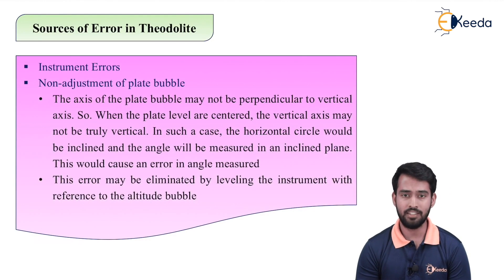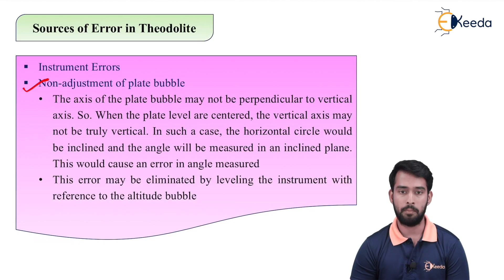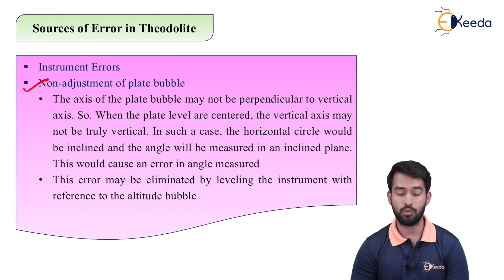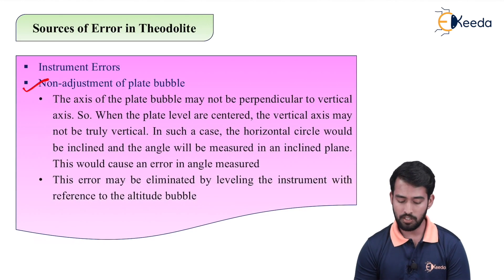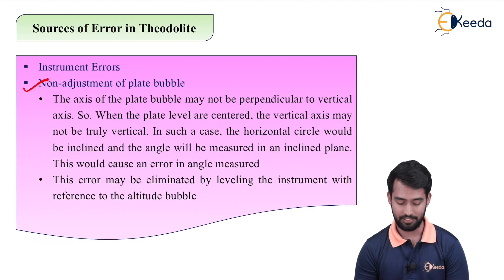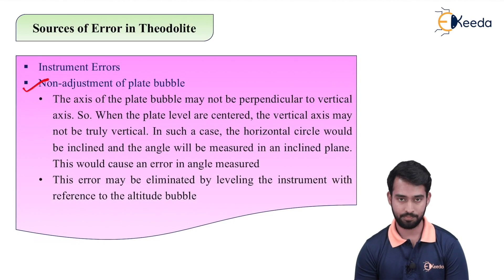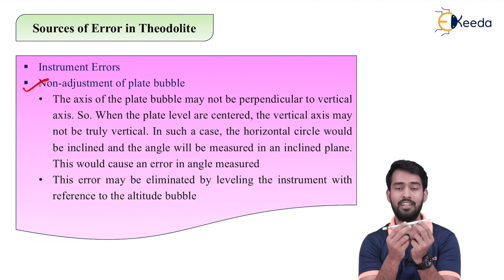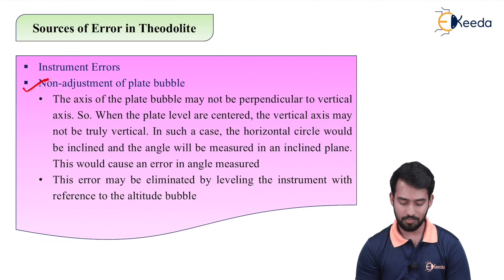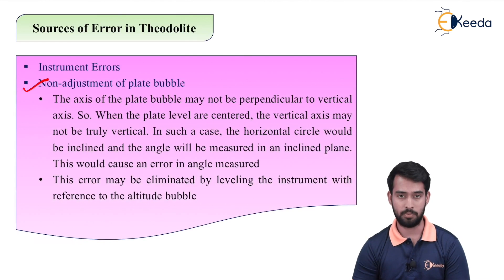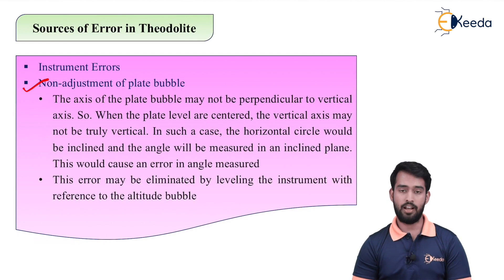The first and common error is non-adjustment of the plate bubble. The axis of the plate bubble may not be perpendicular to the vertical axis. So when the plate levels are centered, the vertical axis may not be truly vertical. In such a case, the horizontal circle will be inclined and the angle will be measured in an inclined plane, whereas we have to measure the angle in horizontal planes only. This error may be eliminated by leveling the instrument with reference to the altitude bubble.